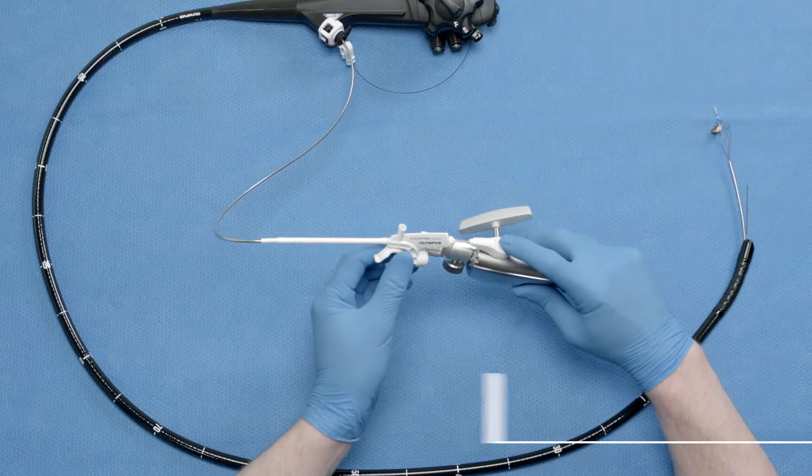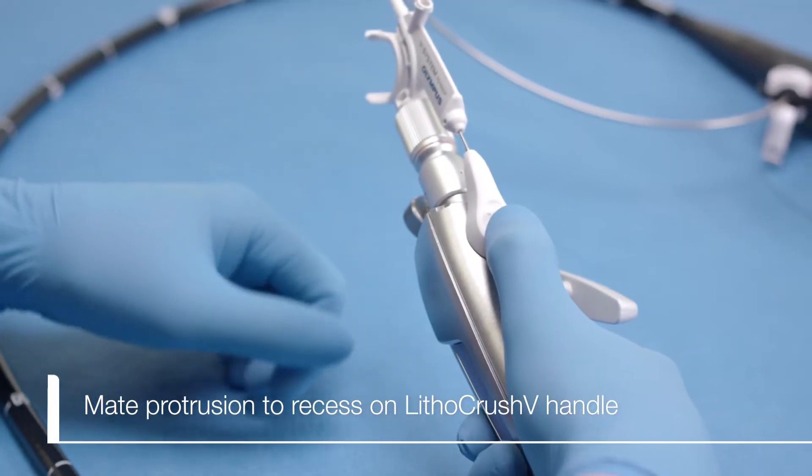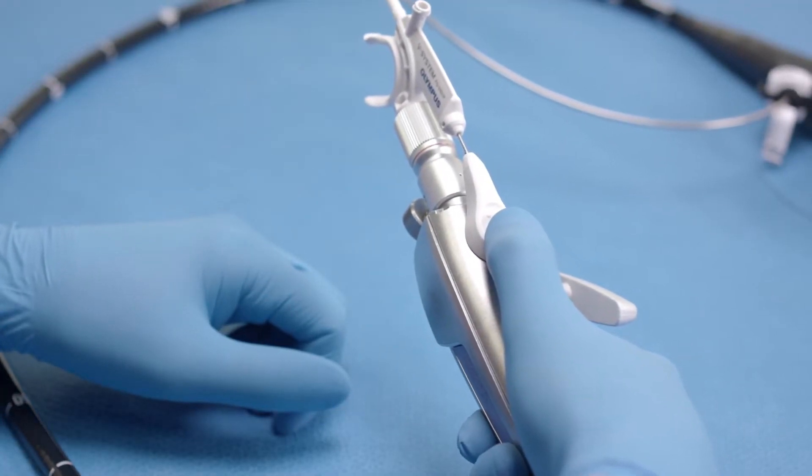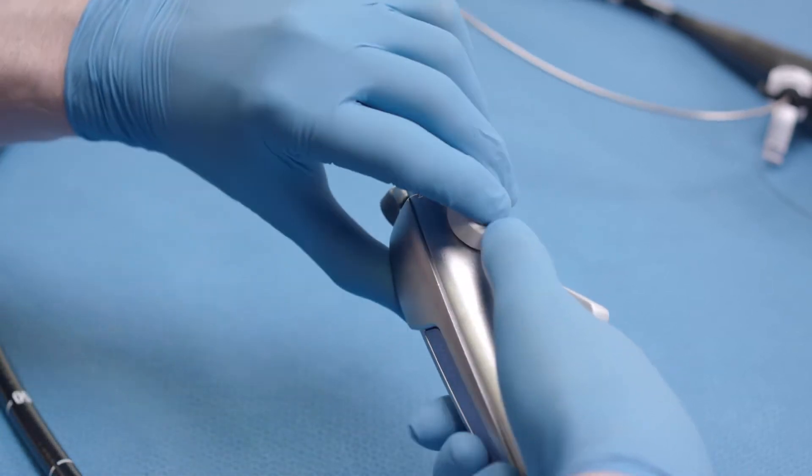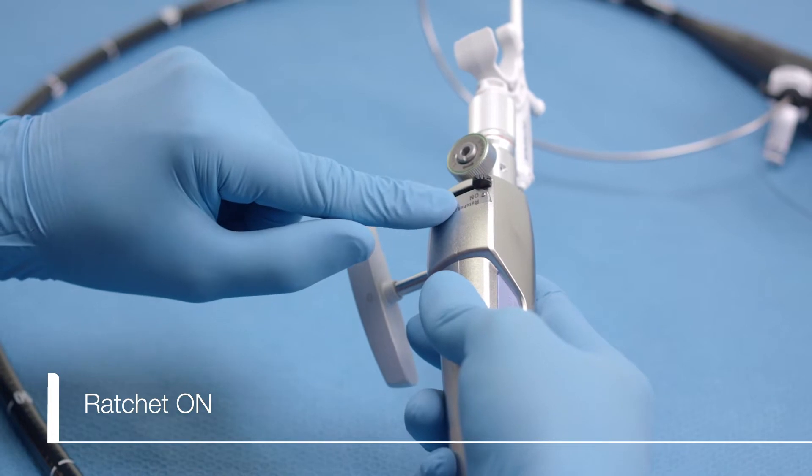Next, insert the protrusion on the VortiCatch V Handle into the recess on the control rod on the Lithocrush V Handle. Push the ratchet switch on the Lithocrush V Handle into the on position.